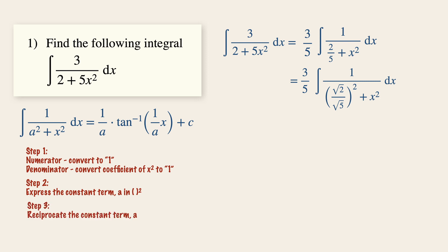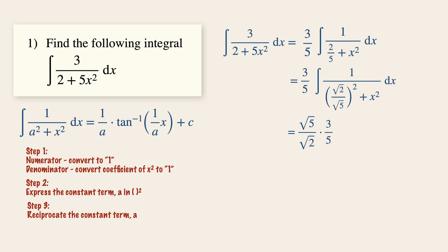In step number 3, we reciprocate this term, because we see that there is 1 over a in the formula. Doing so, we will have square root of 5 over square root of 2, multiplied by 3 over 5. We can then write the tangent inverse, as well as square root of 5 over square root of 2 times x, plus c, the arbitrary constant.